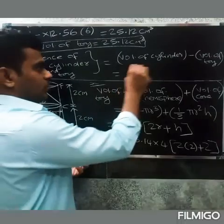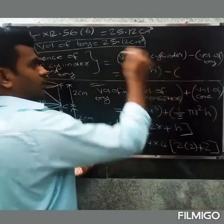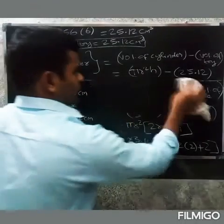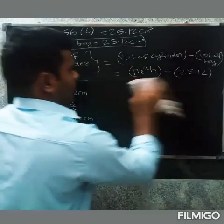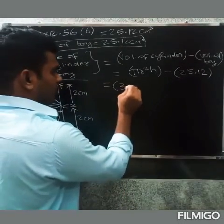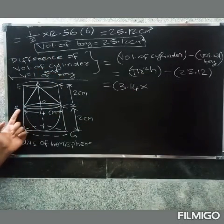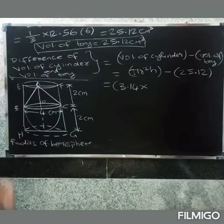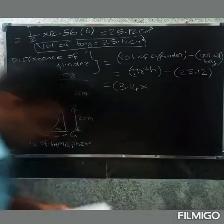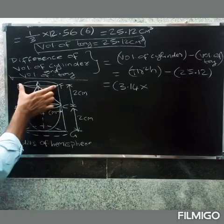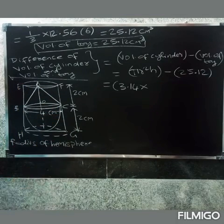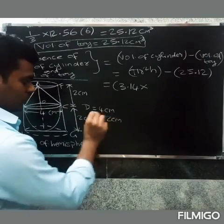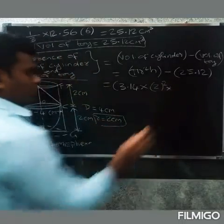Volume of cylinder = π r² h. The diameter of the cylinder is 4 cm, so radius of cylinder = 4 ÷ 2 = 2 cm. The total height of the cylinder equals the height of hemisphere plus height of cone = 2 + 2 = 4 cm.